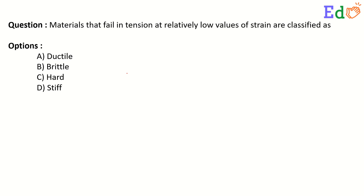The question is: materials that fail in tension at relatively low values of strain are classified as — options are: (a) ductile, (b) brittle, (c) hard, (d) stiff.